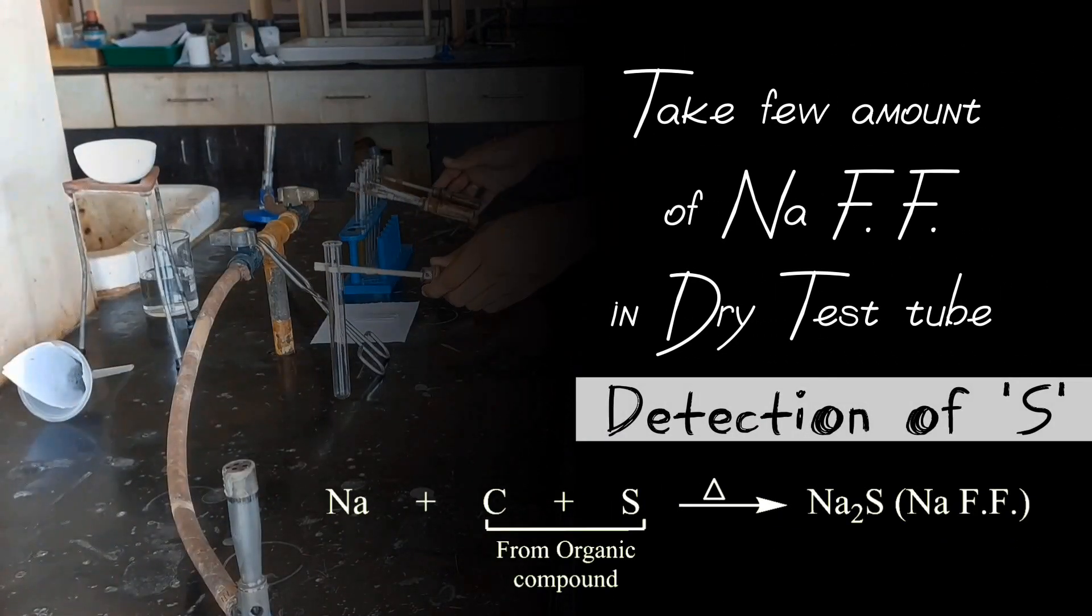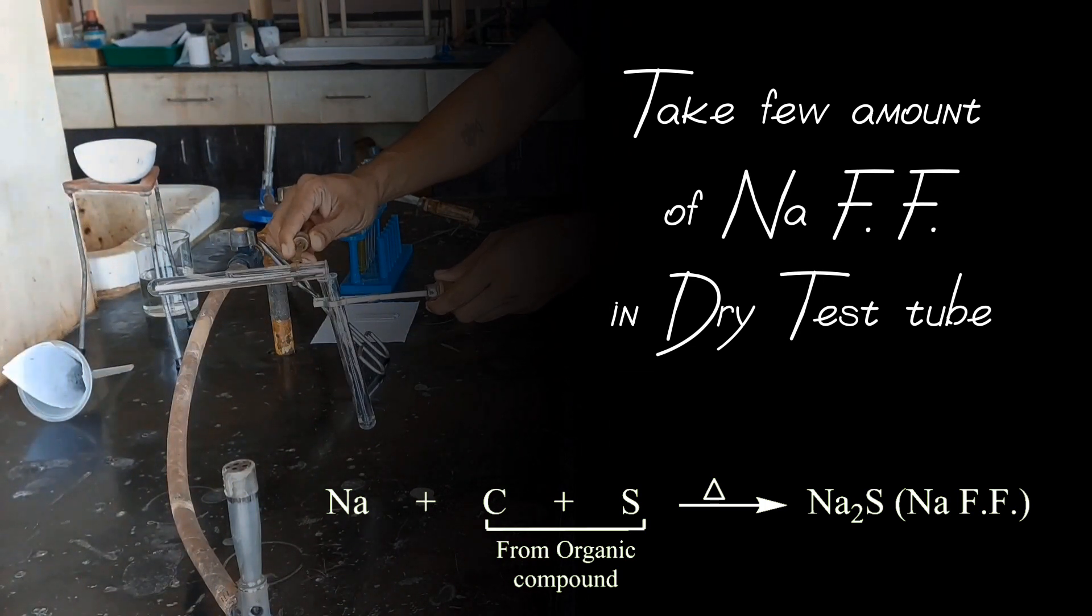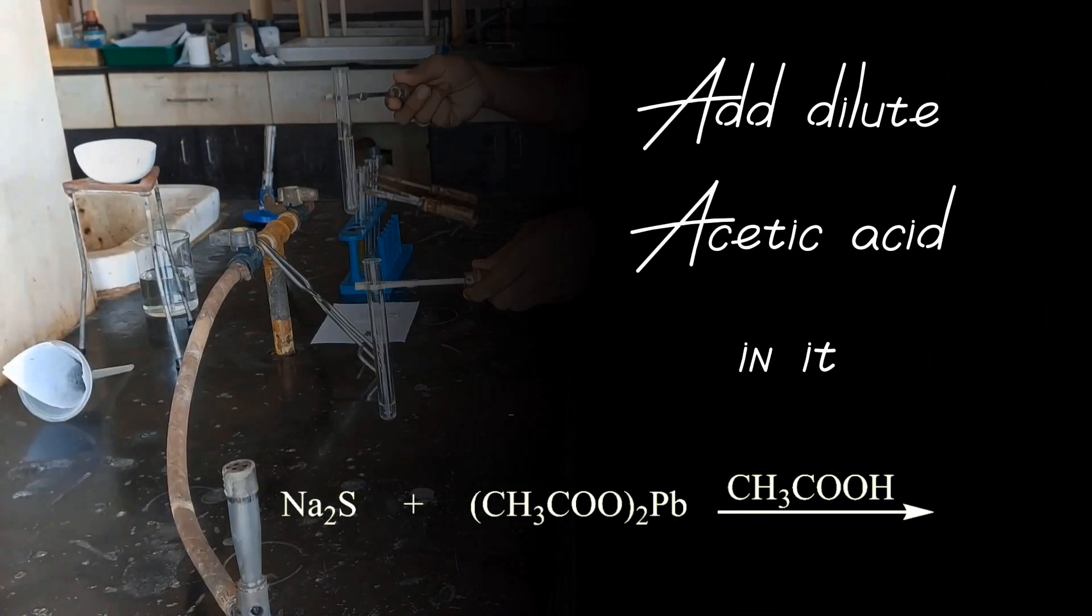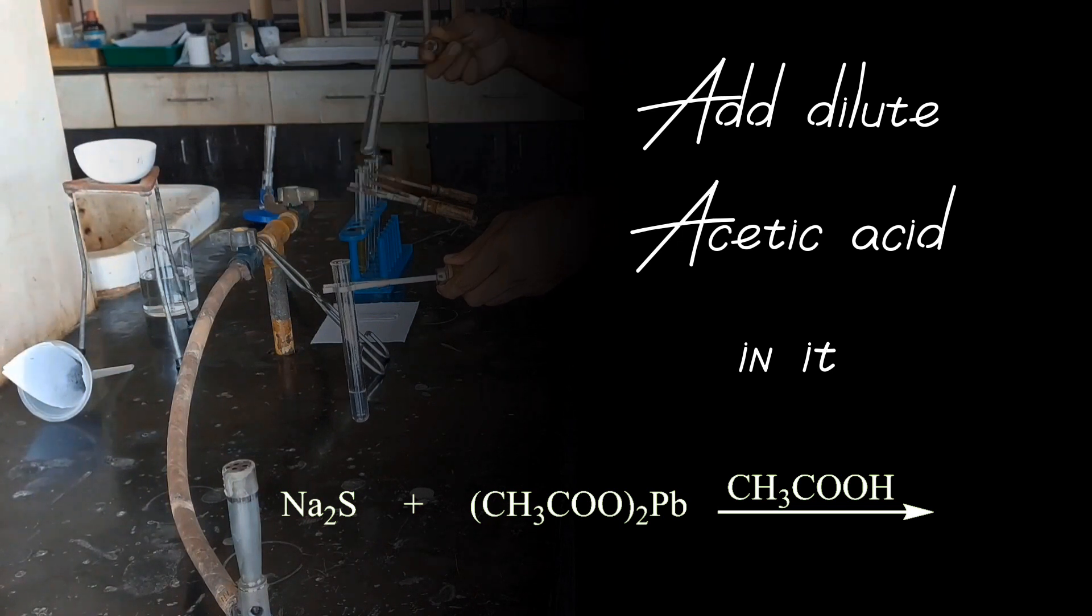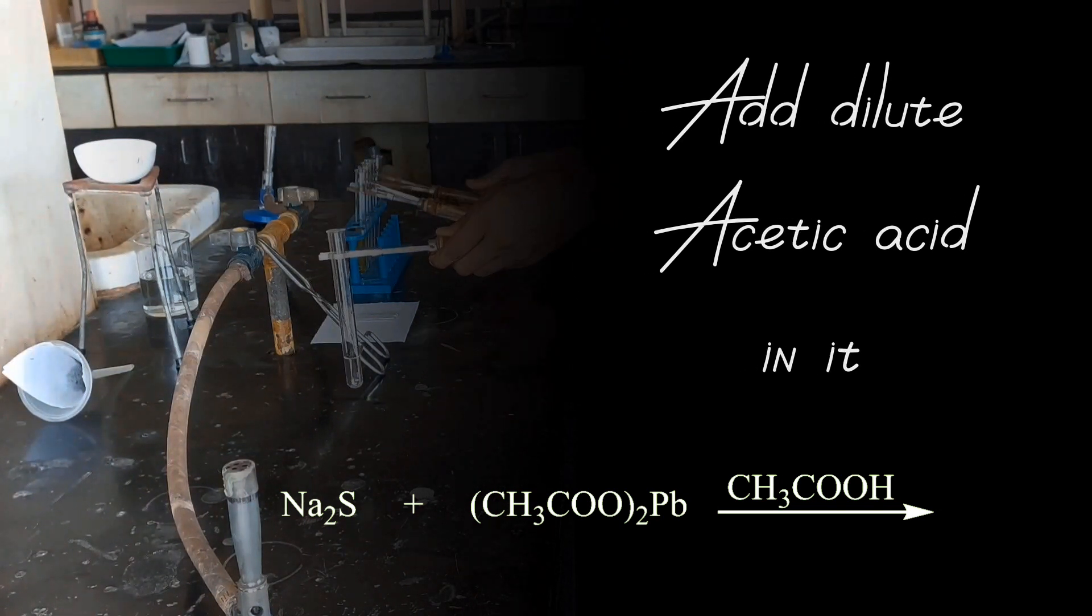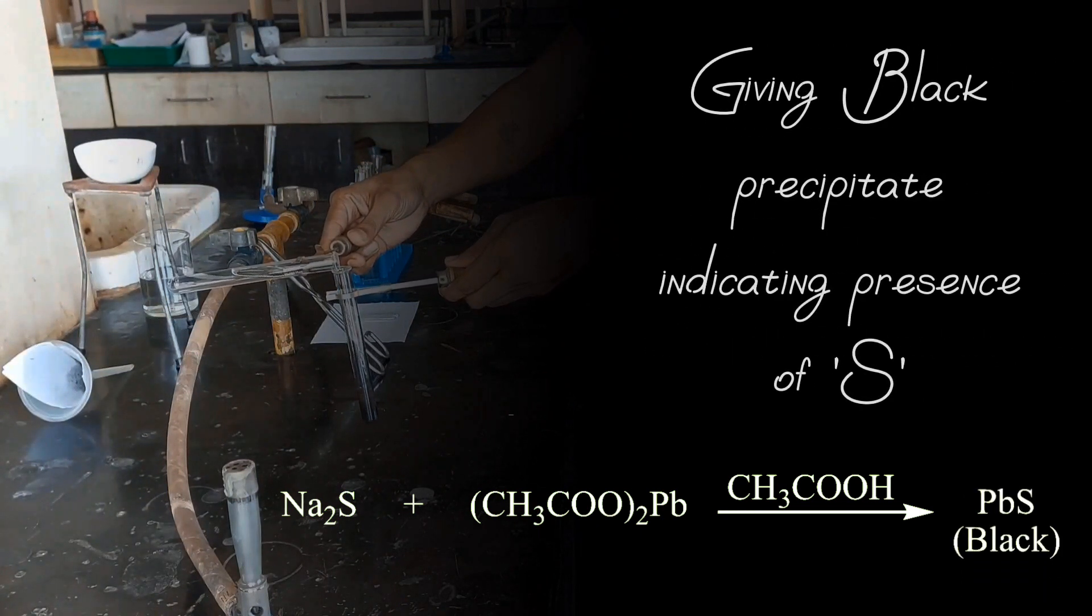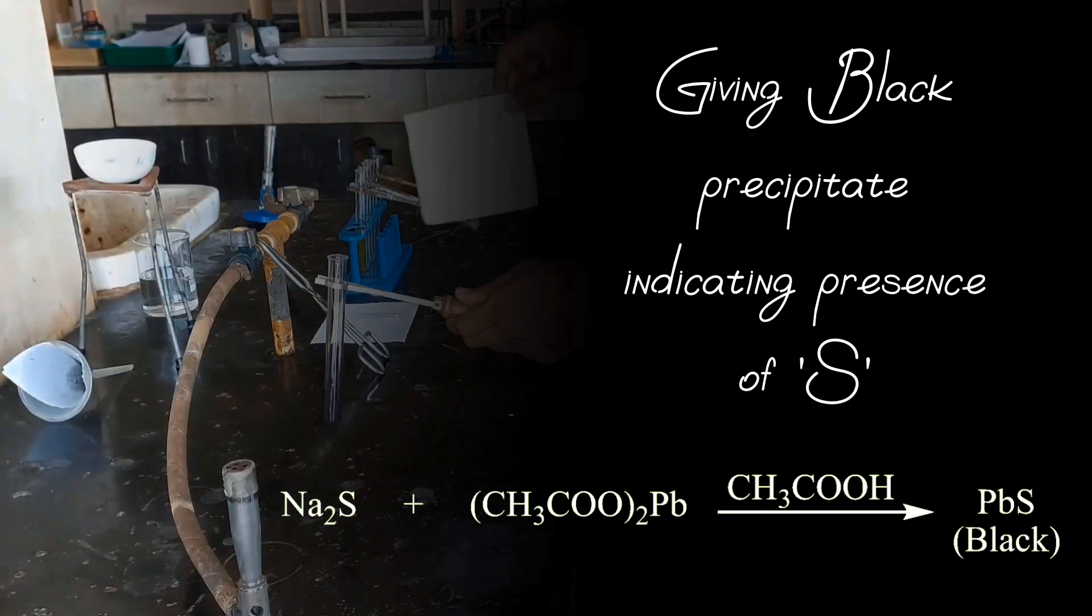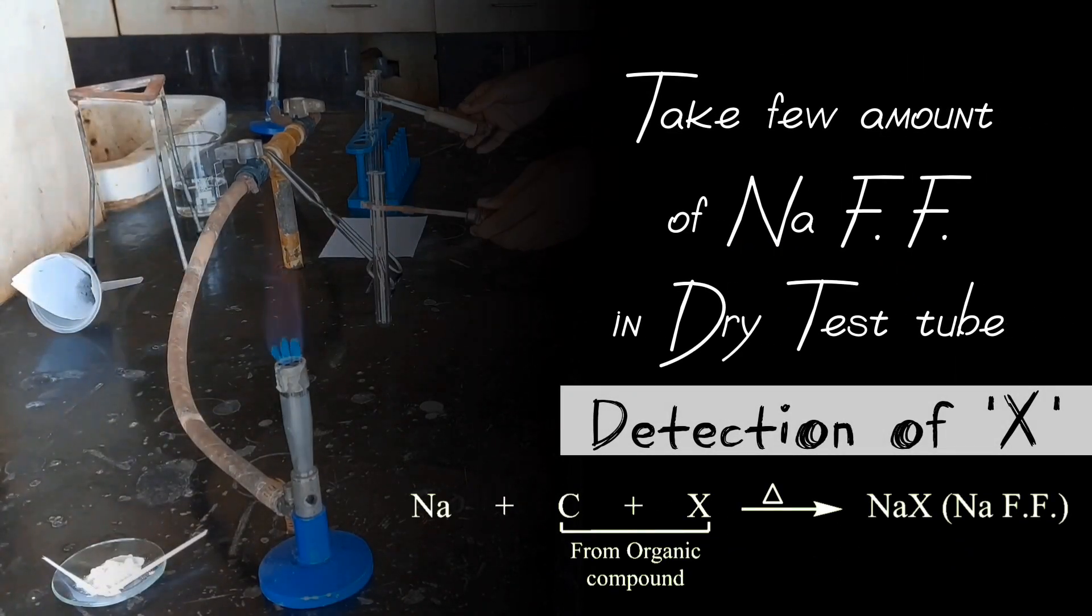Now let us do detection of Sulphur. Take few amount of sodium fusion filtrate in dry test tube. Add dilute acetic acid in it and add lead acetate solution in it. Boil it on Bunsen burner.